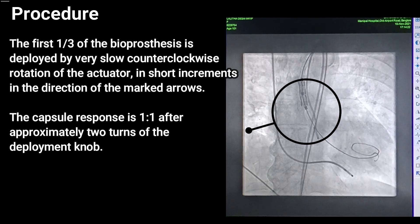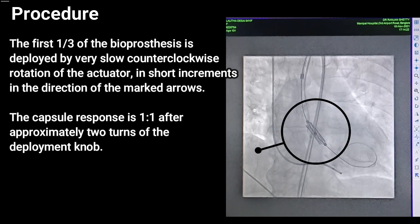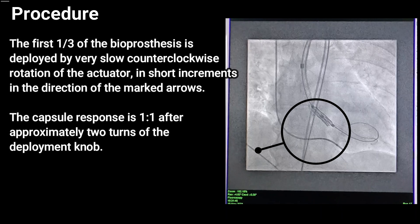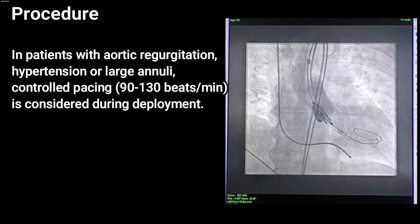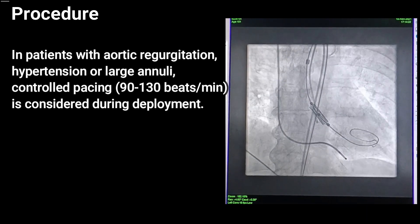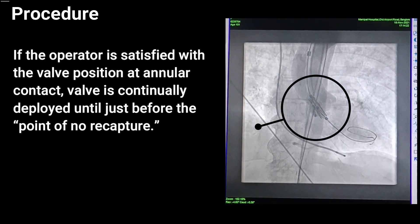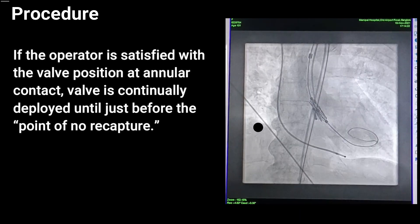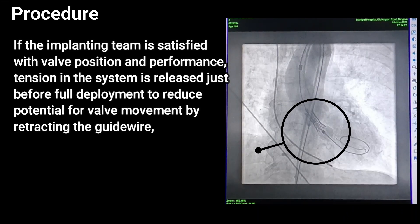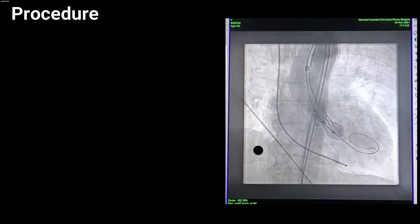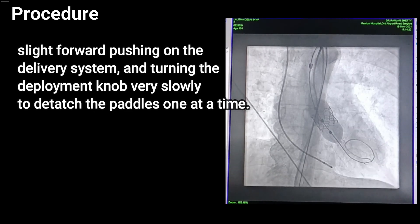The coplanar image projection is achieved to see the radiopaque marker as a straight line. The first one-third of the bioprosthesis is deployed by very slow counterclockwise rotation of the actuator in short increments in the direction of the marked arrows. In patients with aortic regurgitation, hypertension, or large annuli, controlled pacing at 90–130 beats per minute is used during deployment. If satisfied with valve position at annular contact, deployment continues until just before the point of no recapture, then tension is released just before full deployment to reduce potential valve movement by retracting the guide wire, pushing on the delivery system, and slowly turning the deployment knob to detach the paddles one at a time.